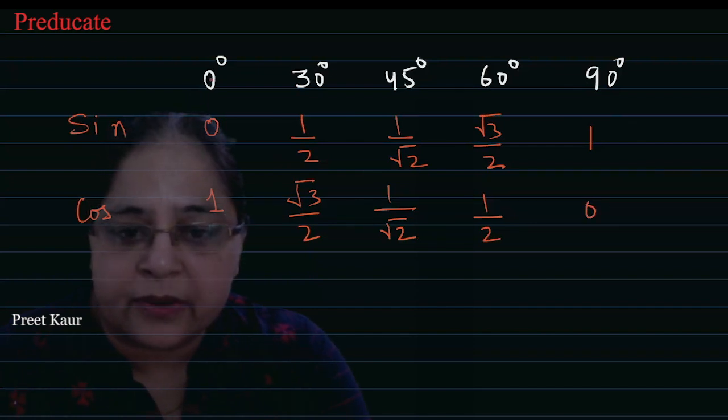Sine value at 0 is 0, and cos 90 is 0. This is the reverse process.